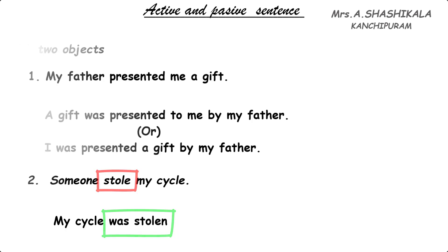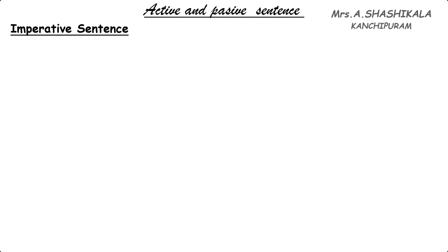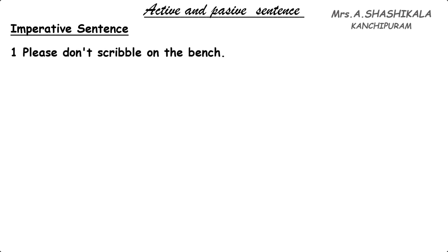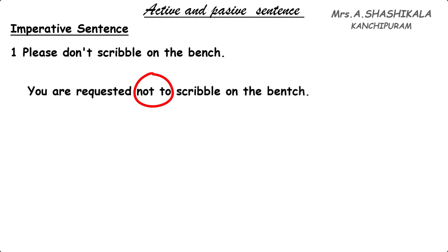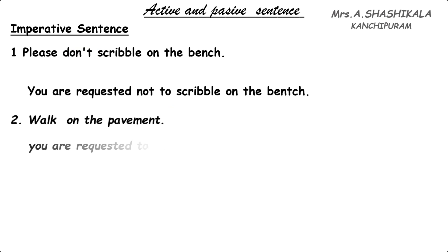Now see the imperative sentence. In imperative, we have two types: transitive and intransitive. If it is an intransitive verb, we use 'you are requested'. Example: 'Please don't scribble on the bench.' It is an imperative sentence with an intransitive verb — there is no object. So we write: 'You are requested not to scribble on the bench.' We use 'not to' because it is negative. Another example: 'Walk on the pavement.' It is positive, so we write: 'You are requested to walk on the pavement.'